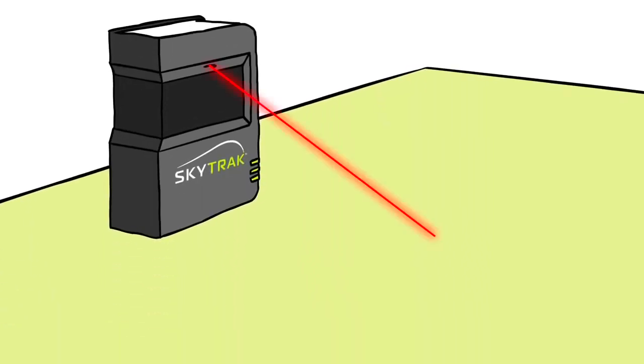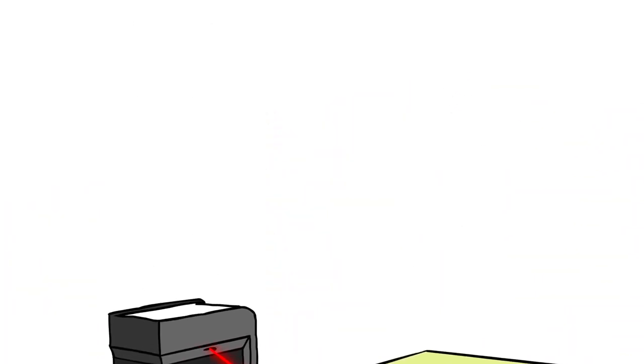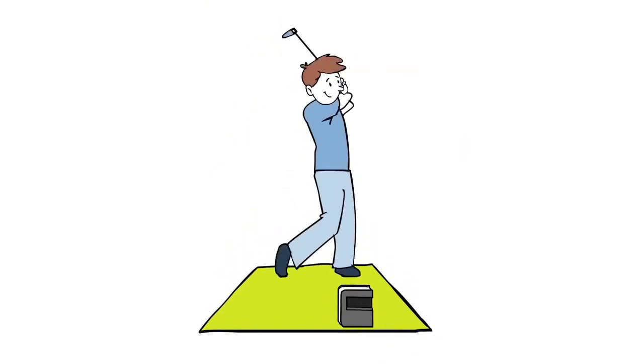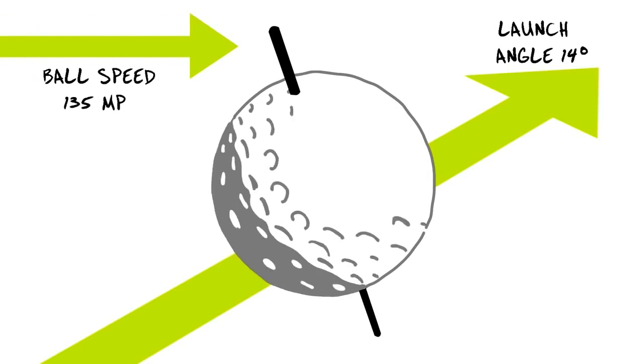Once you're connected, a laser pointer appears to pinpoint exactly where to place the ball. It couldn't be any easier. There's no reason to be nervous. Just use your natural swing to start learning from SkyTrack's advanced algorithms.